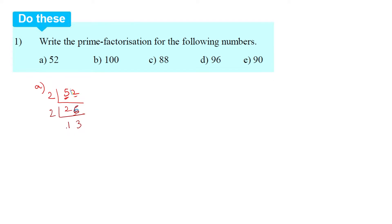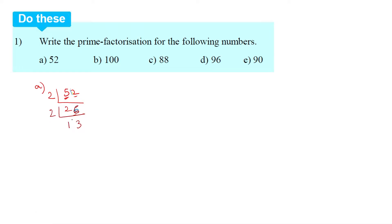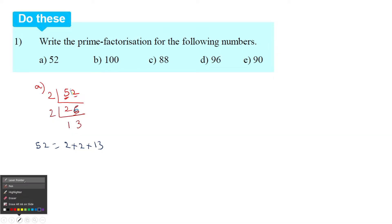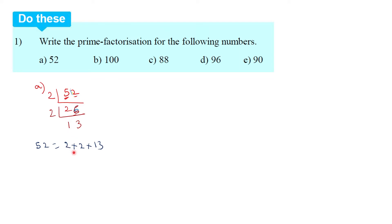13 is a prime number because it cannot be divided further. So now we have 52 = 2 into 2 into 13. This is the division method for prime factorization of 52. If we multiply: 2 into 2 is 4, and 4 into 13 is equal to 52.